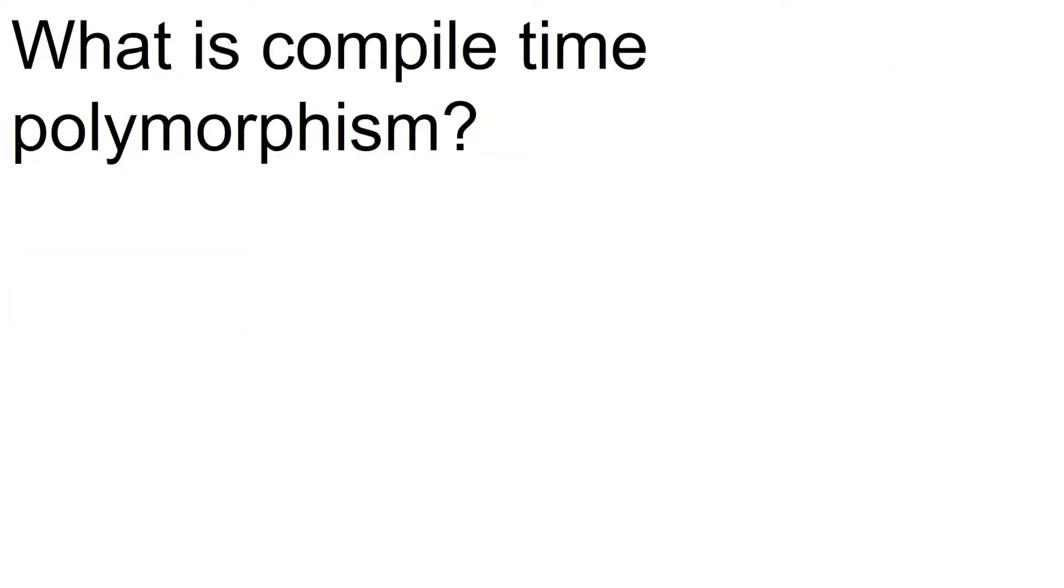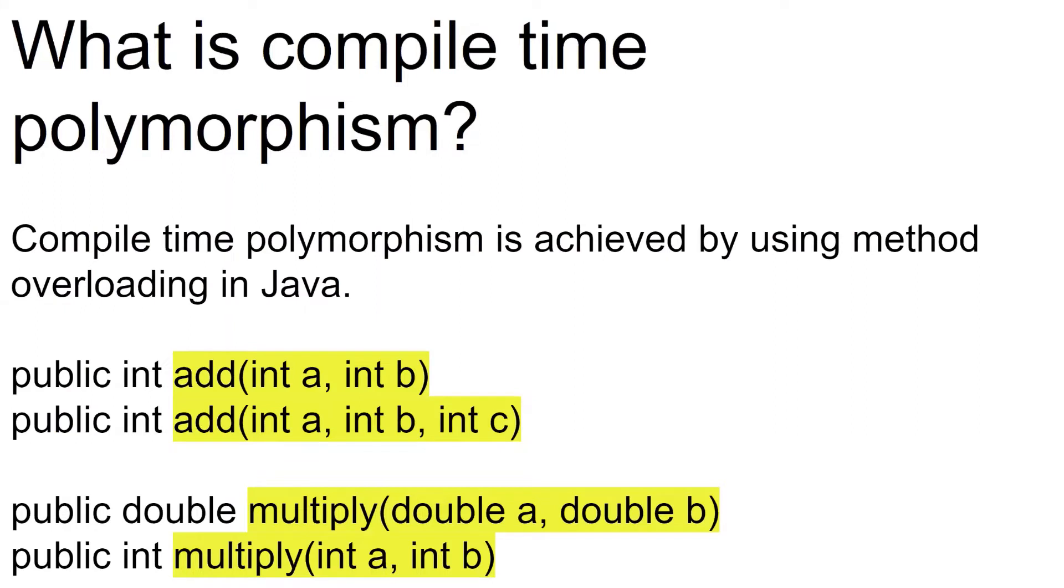So what does it mean by compile time polymorphism? Compile time polymorphism is achieved using method overloading in Java. Method overloading is where you have methods with the same name, but you can change the number of parameters or you can change the data types of the method. Let's have a look at the example. In the first example, we have the method add with two parameters, which are of integer type, integer a comma integer b. Just below that we have a method add with three parameters. So this results in methods with the same name but different number of parameters. This is the first case.